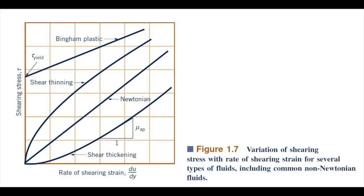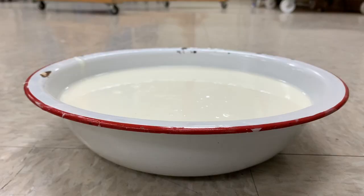For shear thickening fluids, the apparent viscosity increases with increasing shear rate. The harder the fluid is sheared, the more viscous it becomes. An example of this is a mixture of cornstarch and water, which turns from being fluid-like to near-solid when shear is applied.